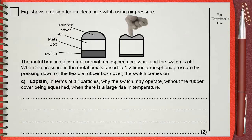Question C: Explain in terms of air particles why the switch may operate without the rubber cover being squashed when there is a large rise in temperature.